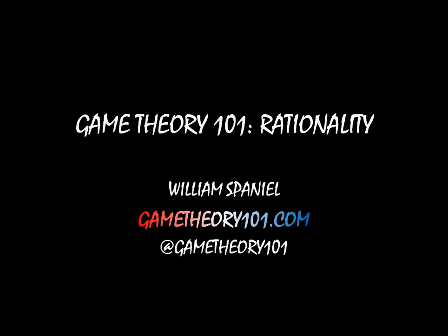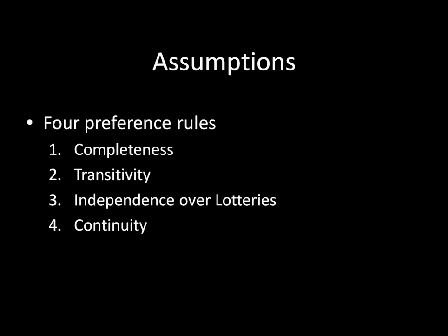Welcome back to Game Theory 101, I'm William Spaniel, and today's topic is Rationality. We're in this unit on Expected Utility Theory, and we know that we require four axioms for Expected Utility Theory to apply. They are Completeness, Transitivity, Independence over Lotteries, and Continuity.